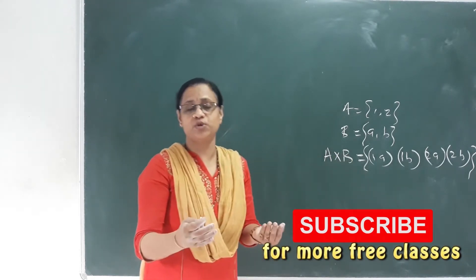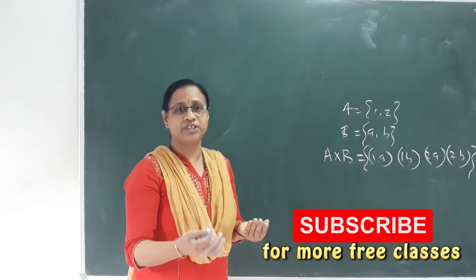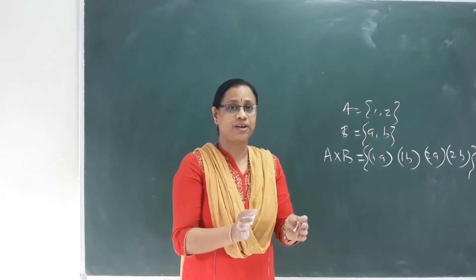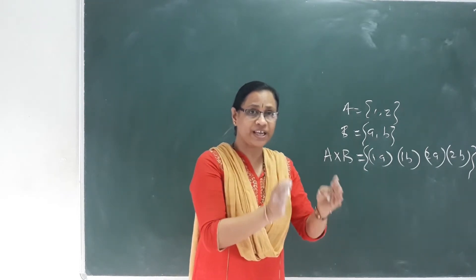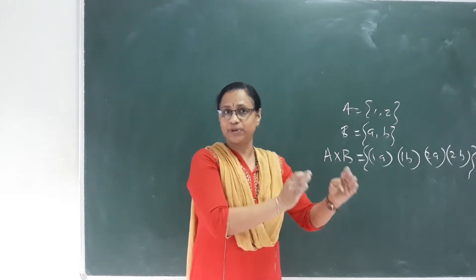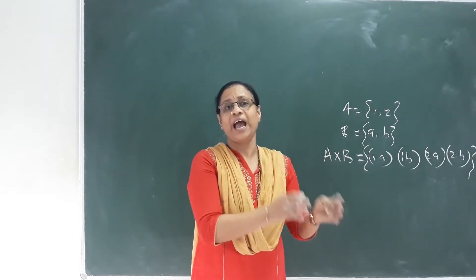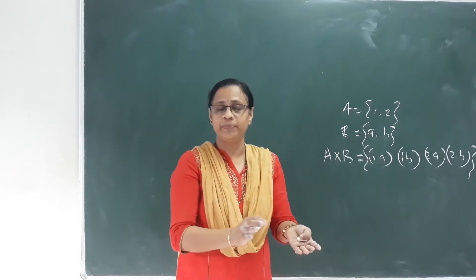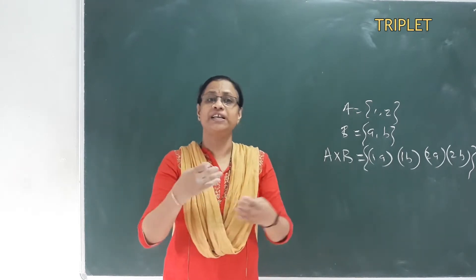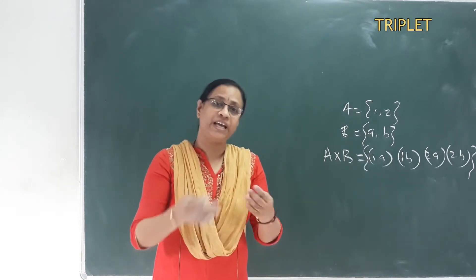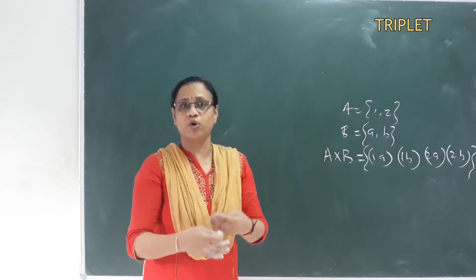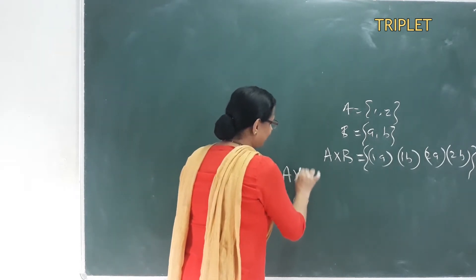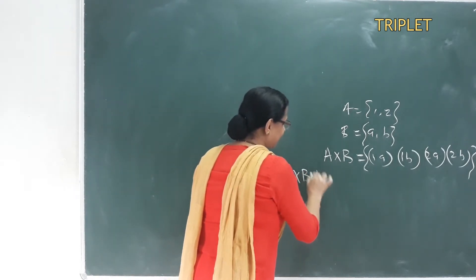If you have seen this definition: A cross B is equal to {(x, y) such that x is an element of A and y is an element of B}. That's for a pair. For a triplet, A cross B cross C gives us {(x, y, z)}.